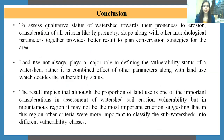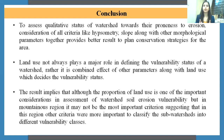To conclude, to assess the quantitative status of watersheds towards their proneness to erosion, we should consider criteria like hypsometry, morphometry, flow, and other morphological parameters to get better results and plan conservation strategies. While land use is important, it does not always play a major role in defining the vulnerability status of the watershed. Rather, it is the combined effect of other parameters along with land use that decides vulnerability status. In mountainous regions, the proportion of land use may not always be the most important criterion; other criteria were more important in classifying subwatersheds into vulnerability classes.